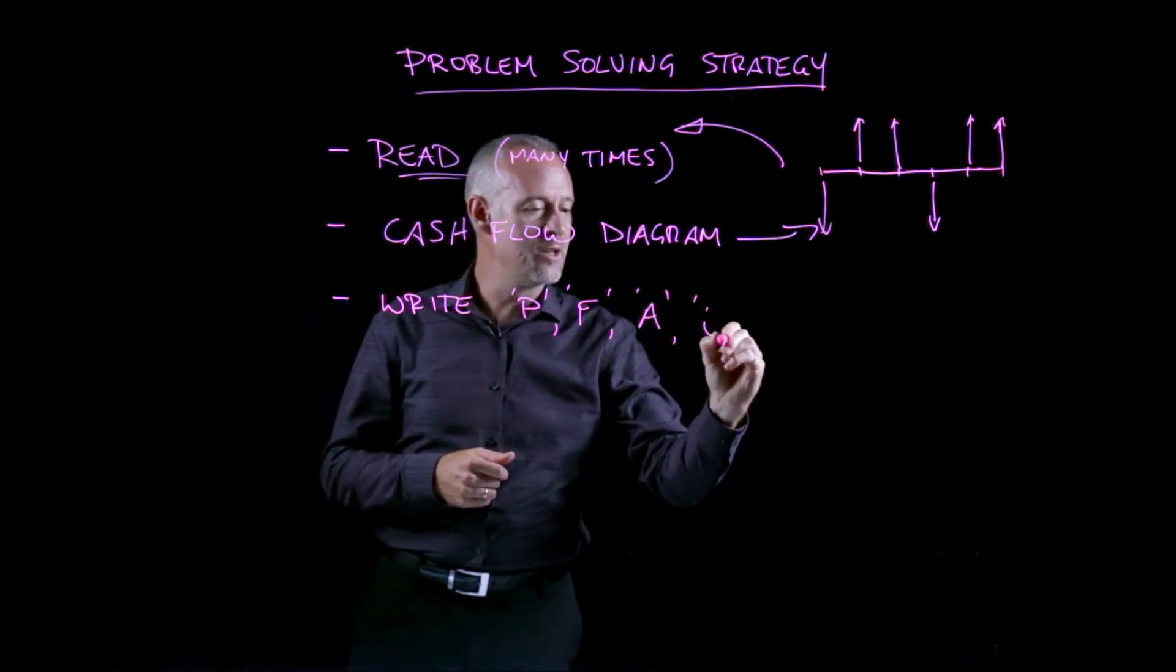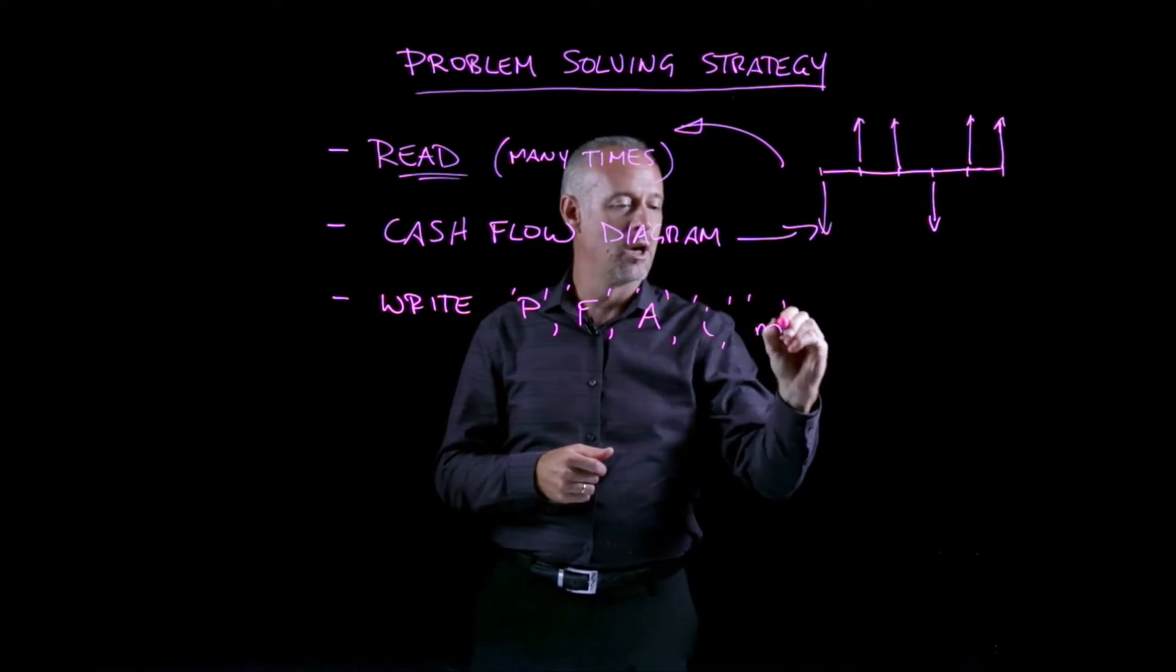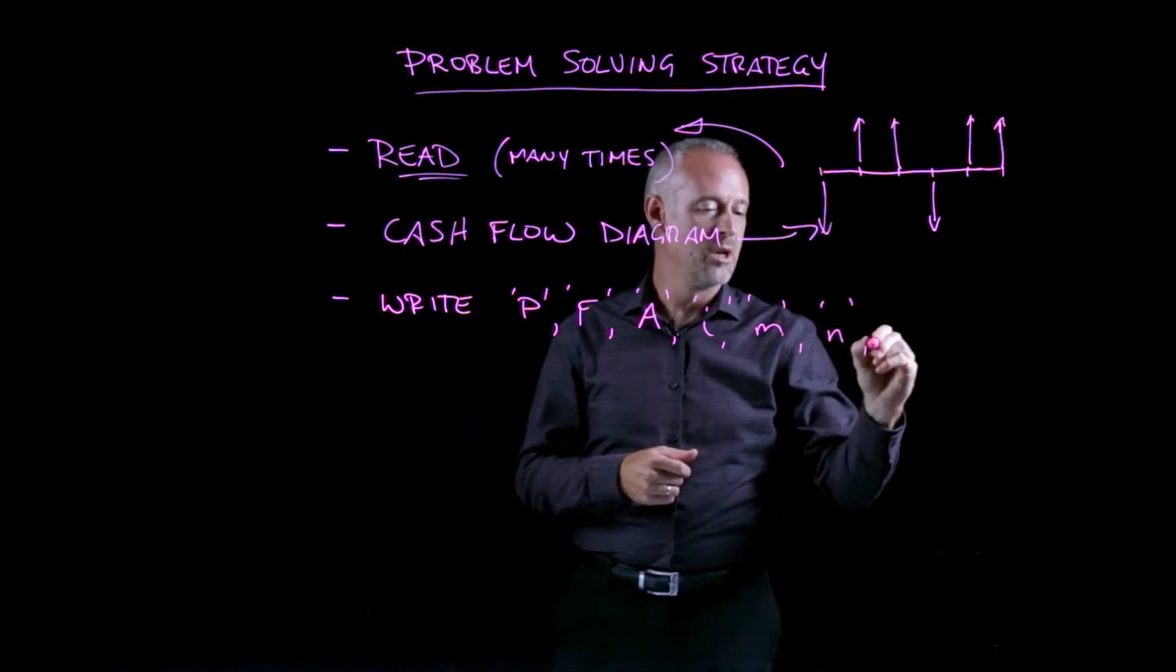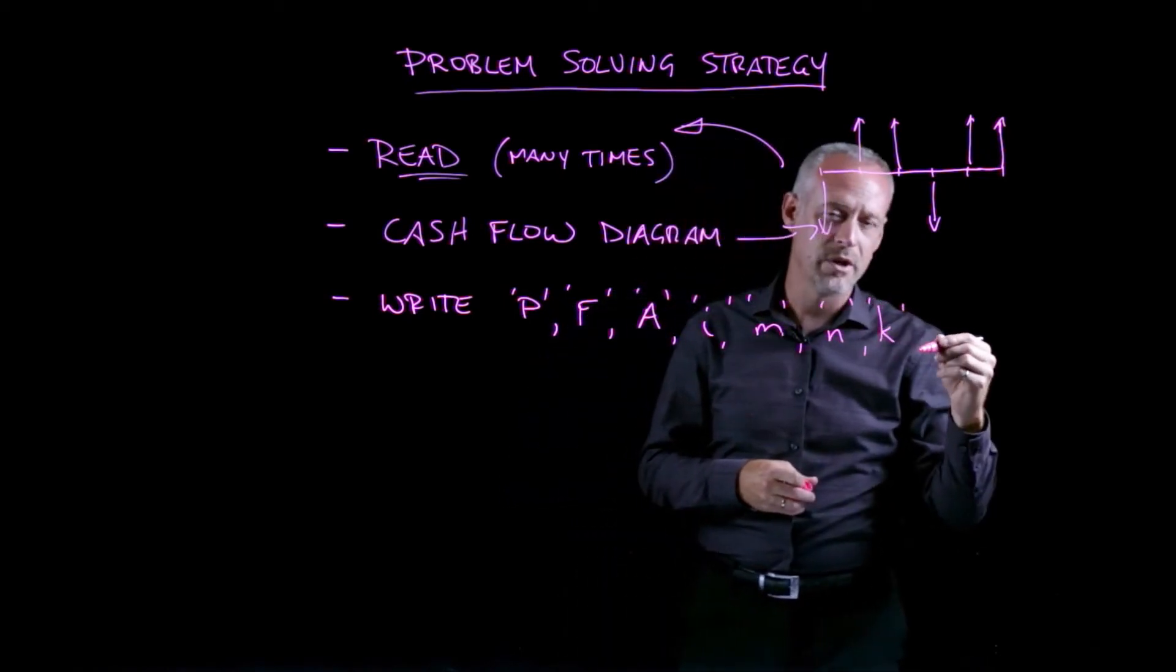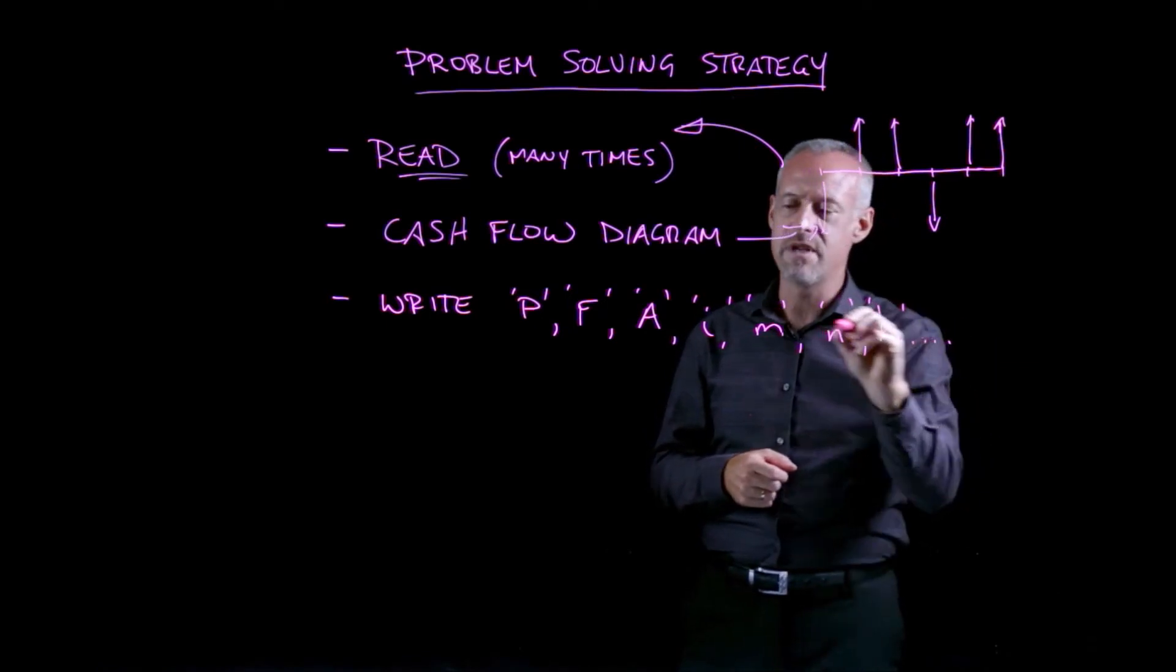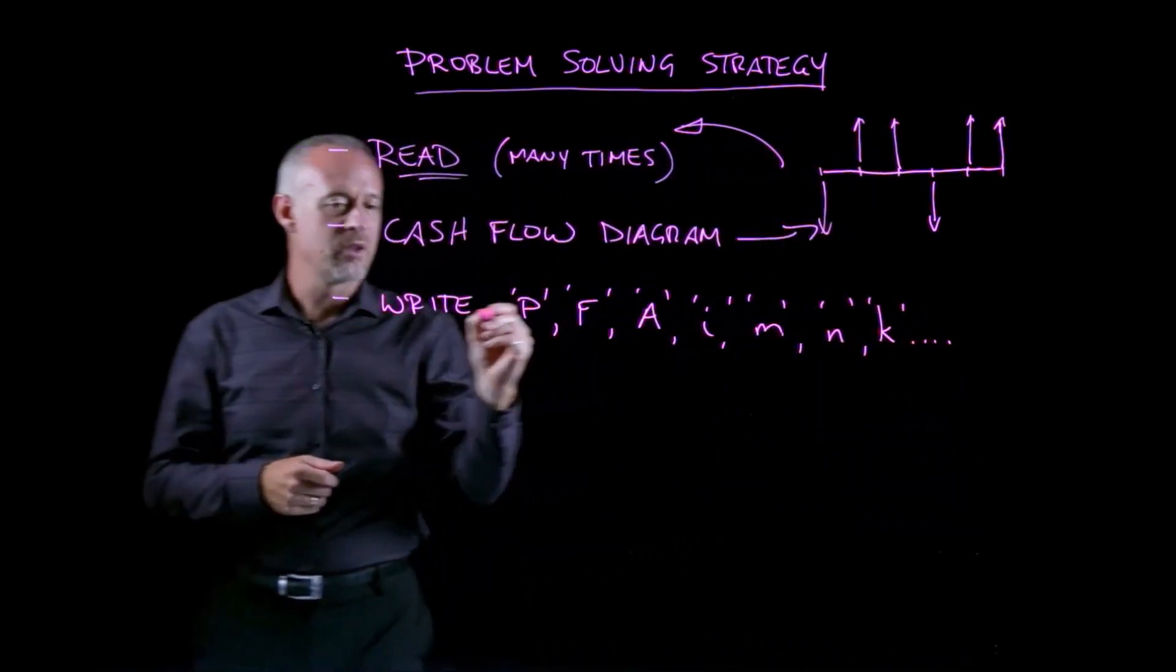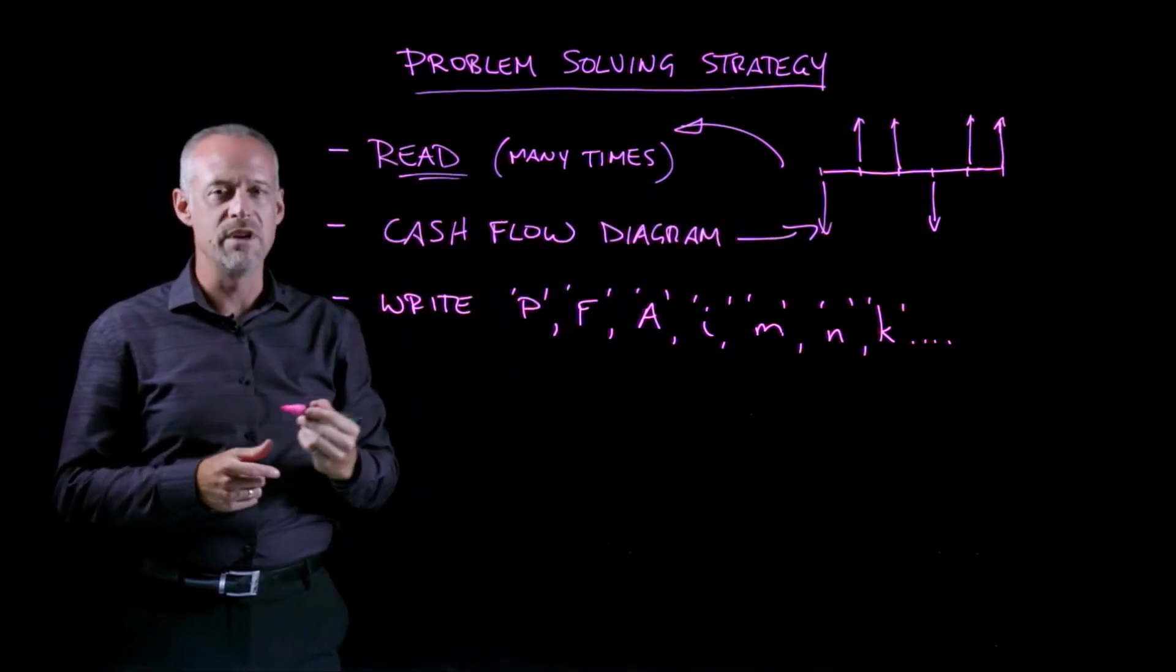What is the interest rate, I? What are the number of compounding periods? How many periods are there in the problem? Is there a different compounding period to the number of periods that the payments occur? So try to write down any of these types of variables as you understand them now in engineering economics. And so you can extract them from the cash flow diagram and from your thorough reading of the problem.